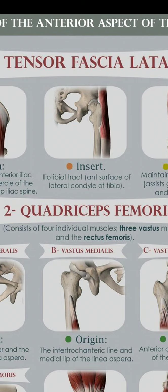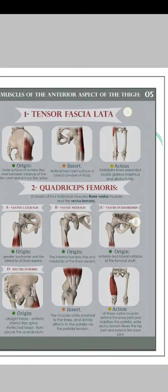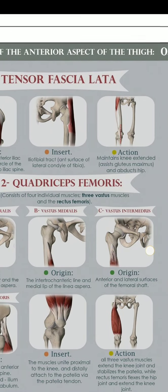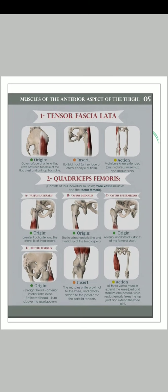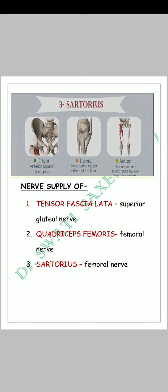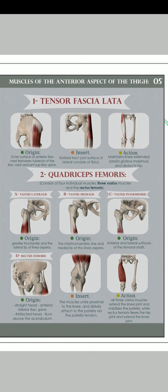The insertion is at the anterior surface of the lateral condyle of the tibia via the iliotibial tract. It helps in the maintenance of knee extension and assists the gluteus maximus in hip abduction. The nerve supply is the superior gluteal nerve, which supplies the Tensor Fascia Lata muscle. The next muscle is the Quadriceps Femoris.